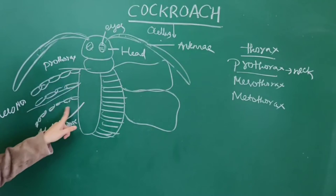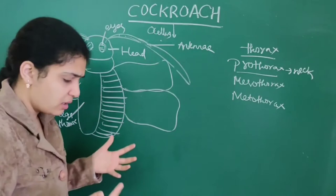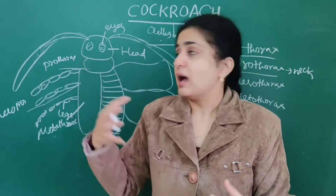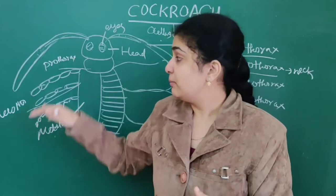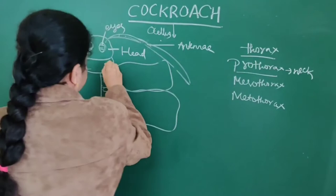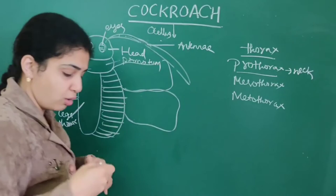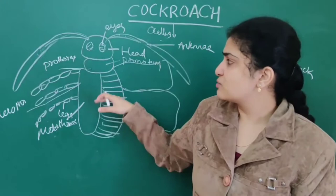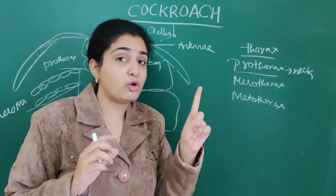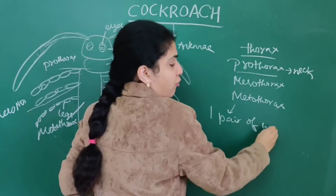Each of the three thorax segments — prothorax, mesothorax, and metathorax — has one pair of walking legs. These legs help the cockroach in moving around, just as limbs help humans. So in total, three pairs of walking legs are present in the thorax.